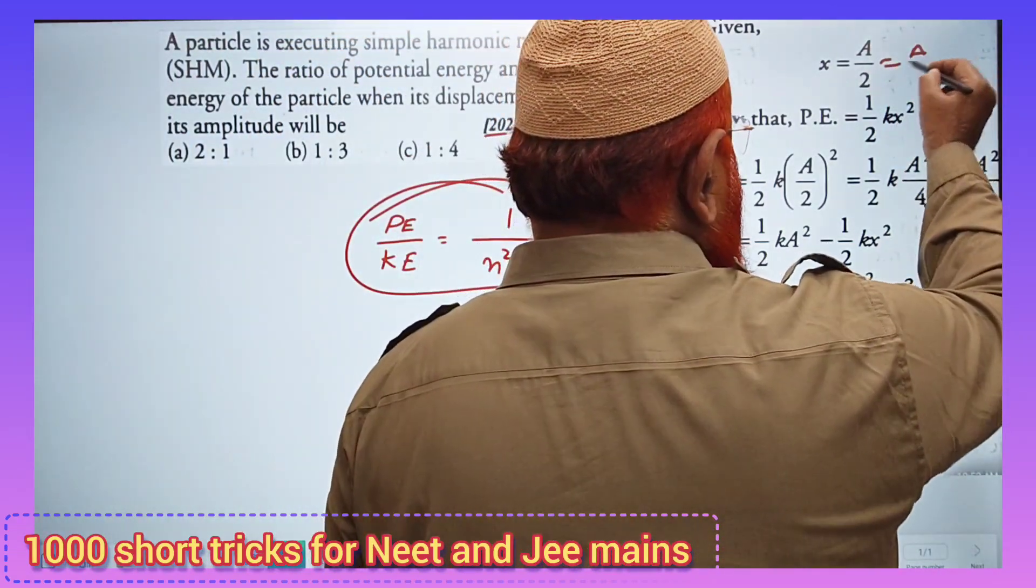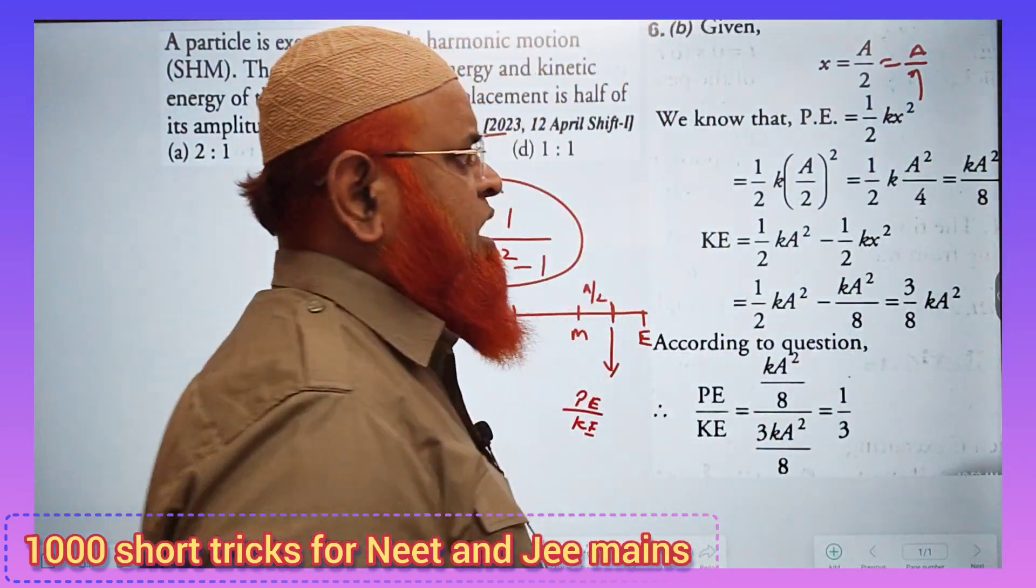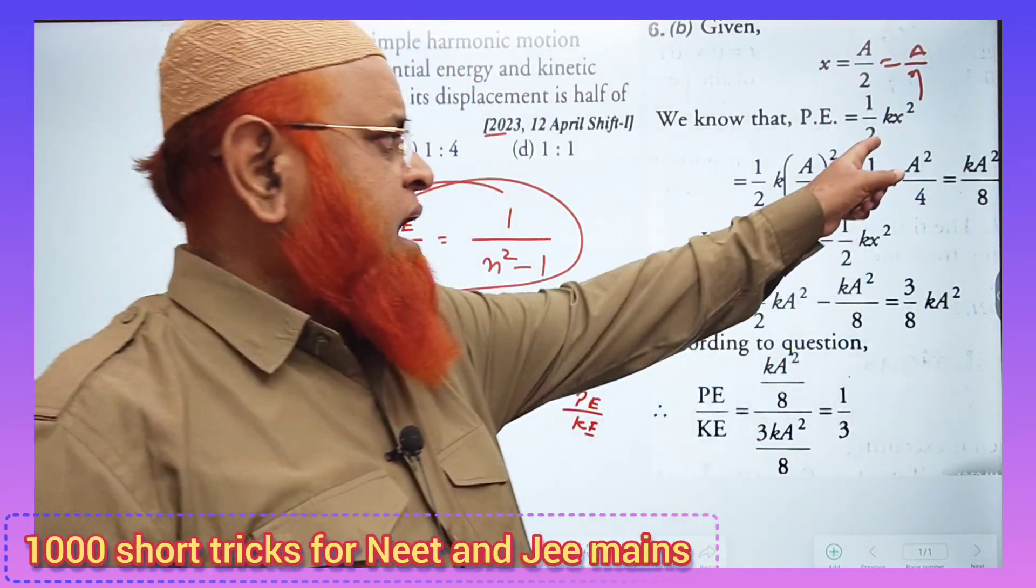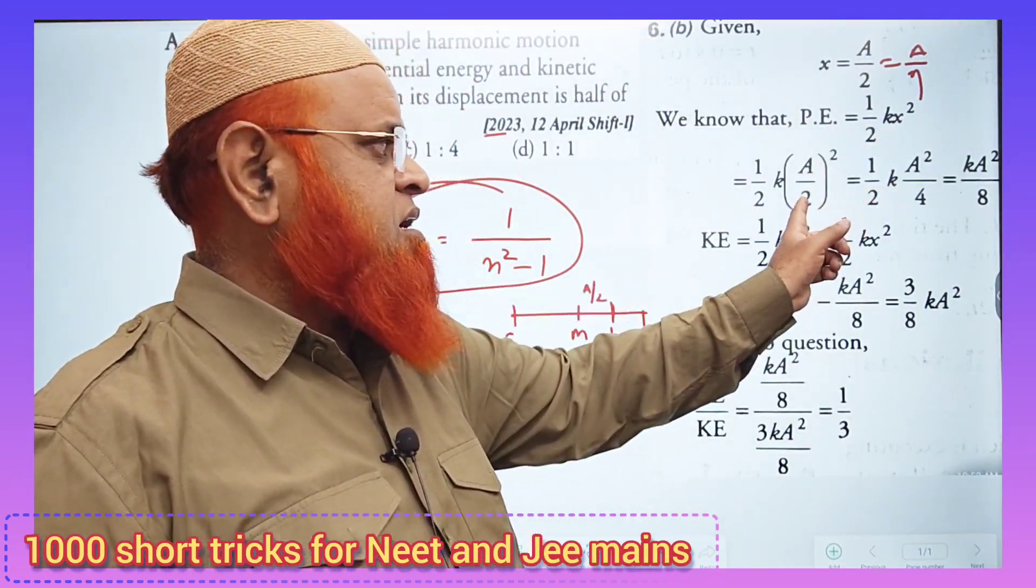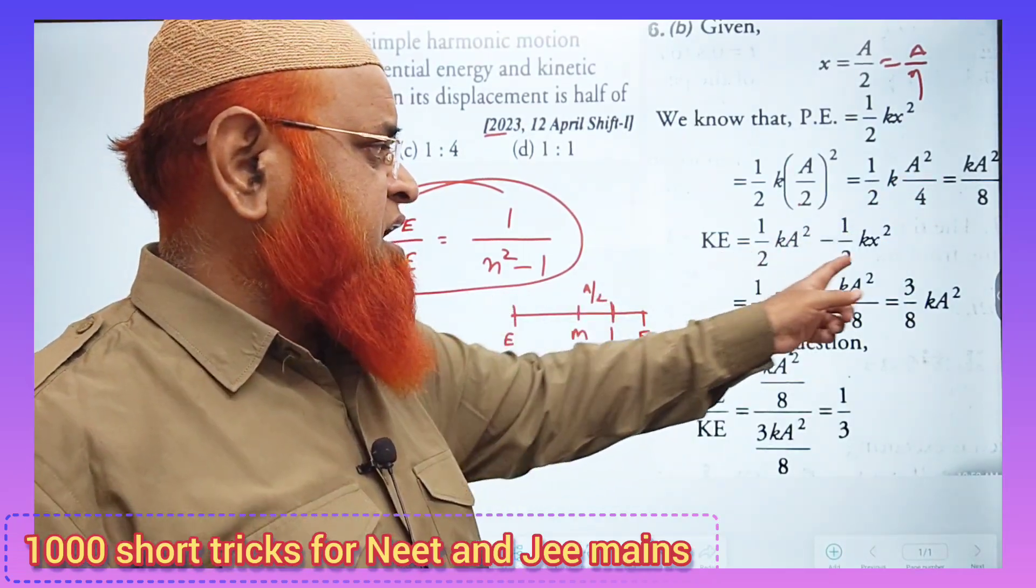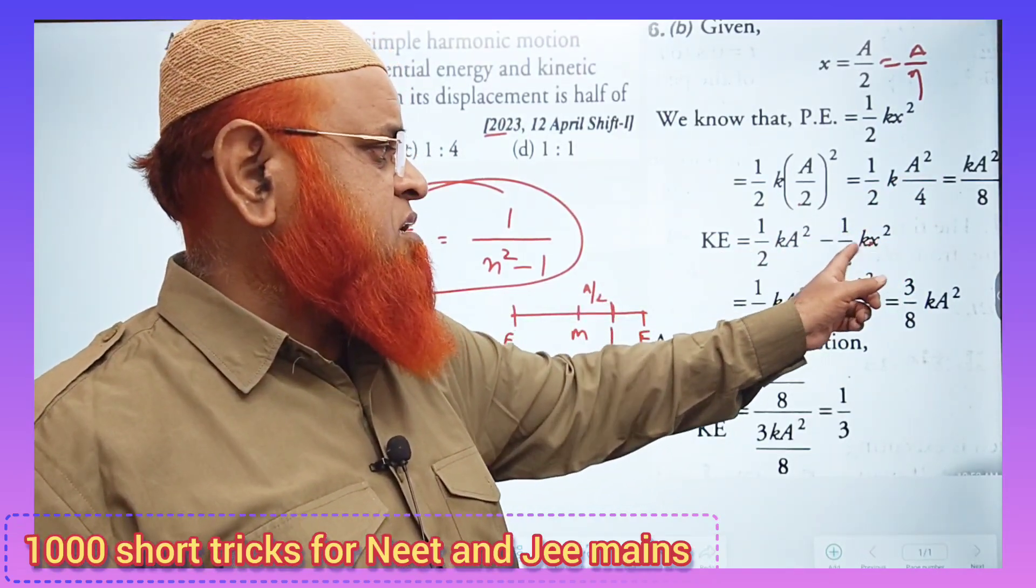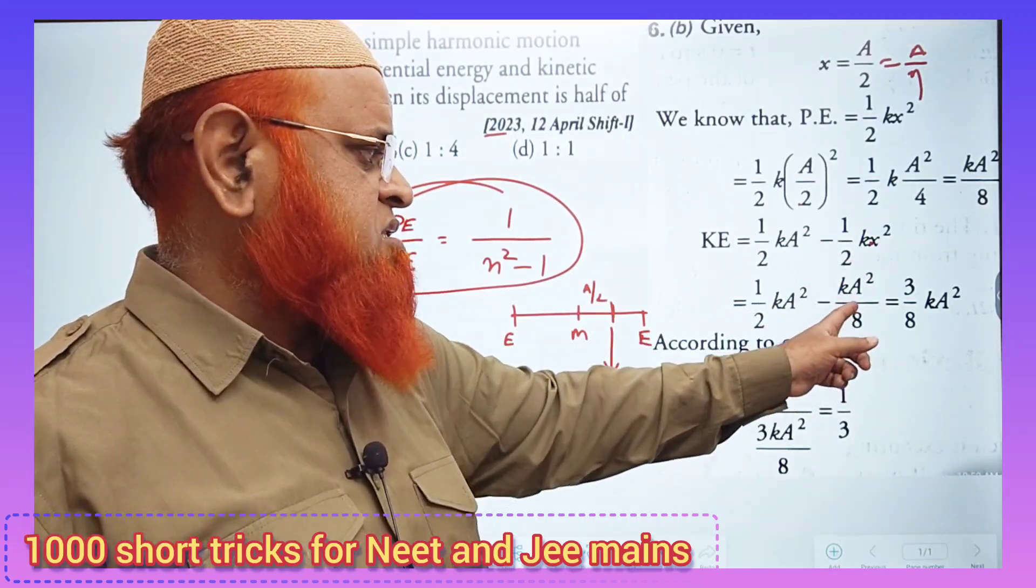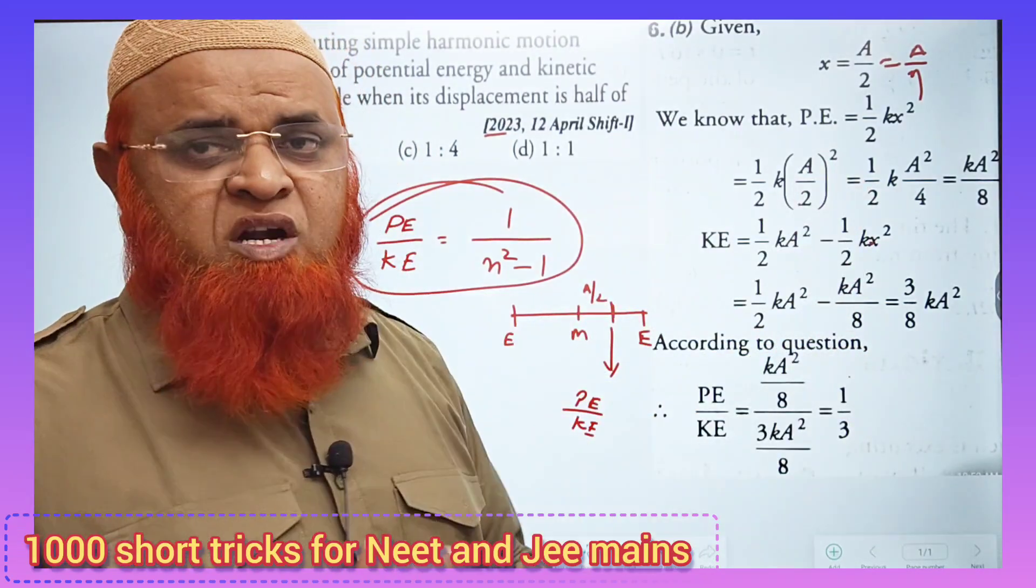Instead of taking a by 2, I have taken a by n. I have substituted this a by n here. I have got potential energy and I have substituted a by n at the place of, I mean here also. That is instead of a by 2, I have substituted a by n.